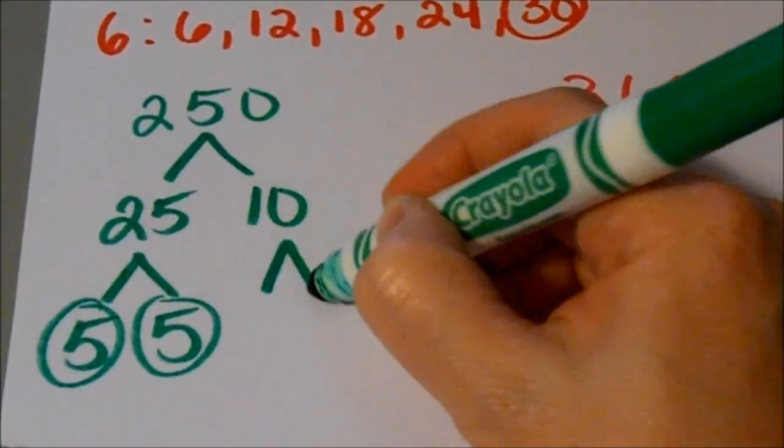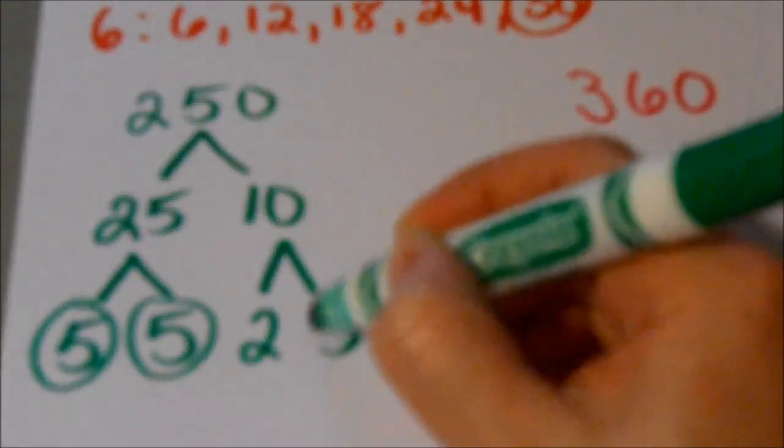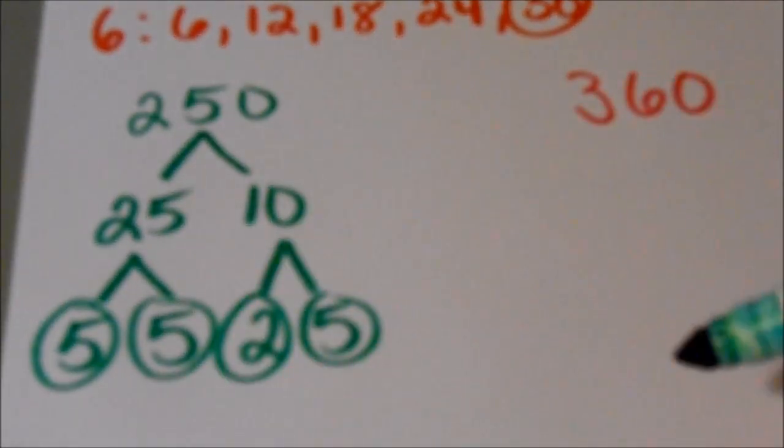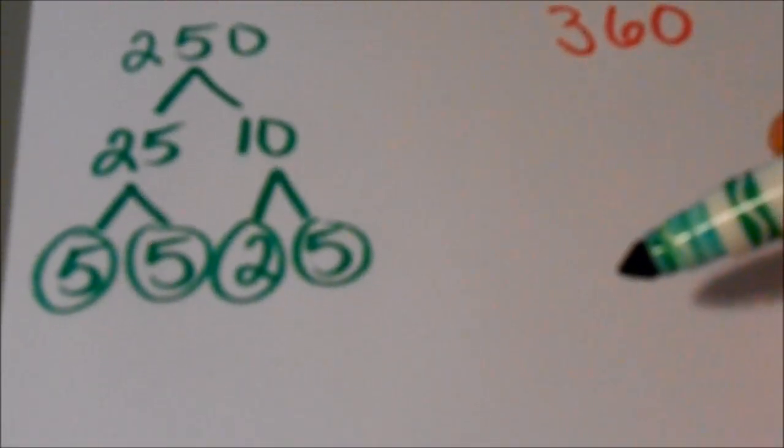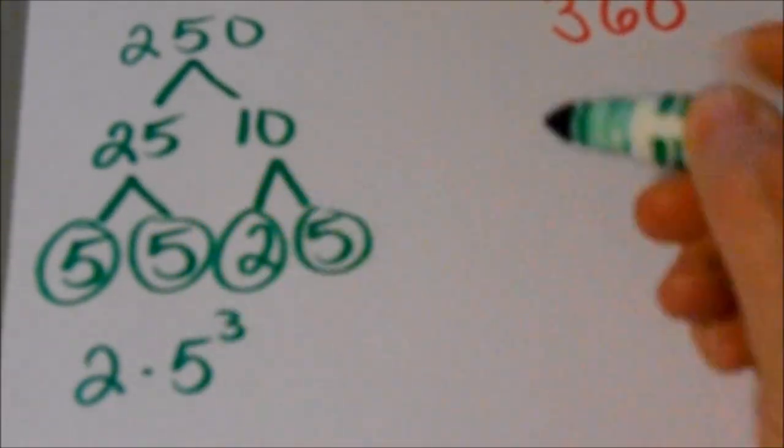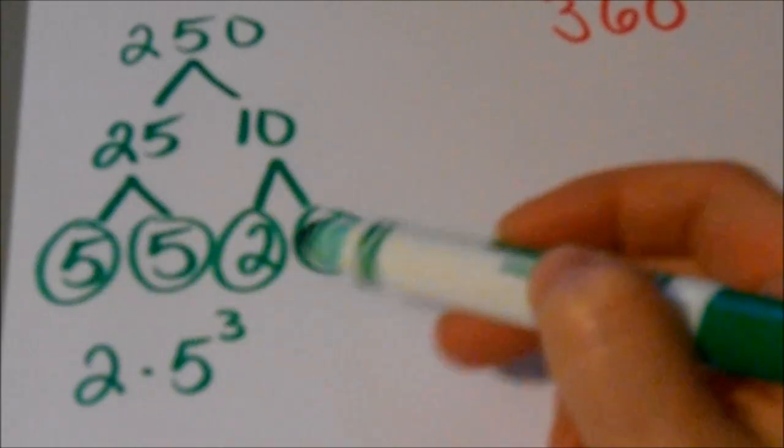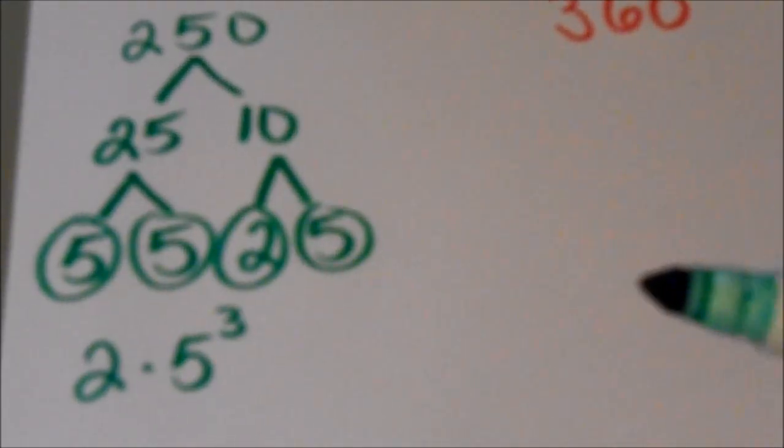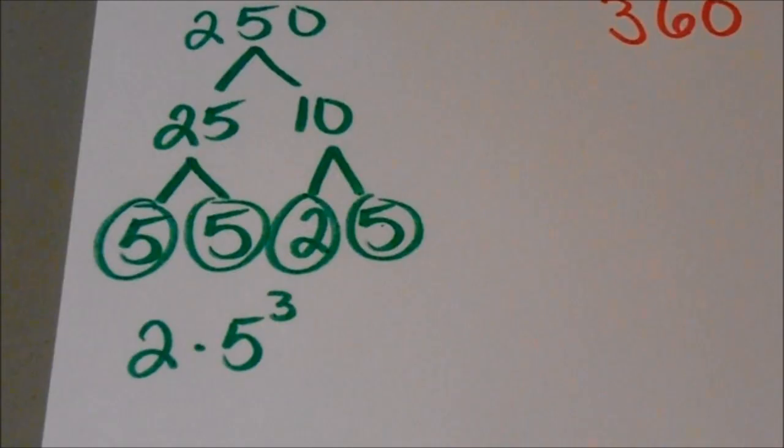So 5 is a prime number and I'm going to factor 10. 2 and 5 is a prime number. So here are my prime numbers. I've got 2 times 5 cubed because I've got three fives that are multiplied together. So that's why I've got the cubed there. There we go. Okay.